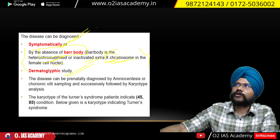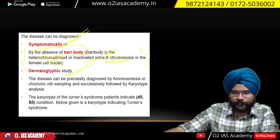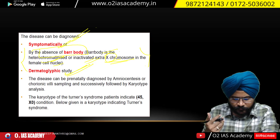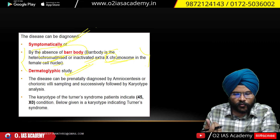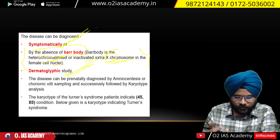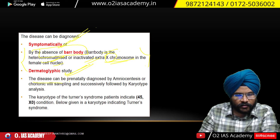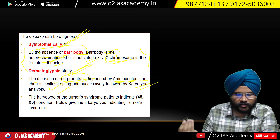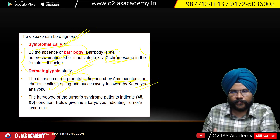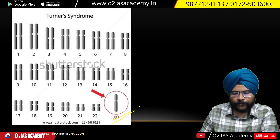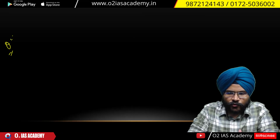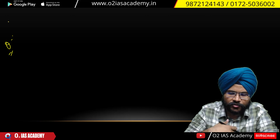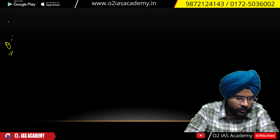The disease can also be diagnosed in parents with the help of amniocentesis and chorionic villus sampling, followed by karyotyping as we have always done. So this is Turner syndrome — XO. I am generally covering 'write a short note' type questions because these types of questions will come, and even for general questions, this level of knowledge needs to be demonstrated.